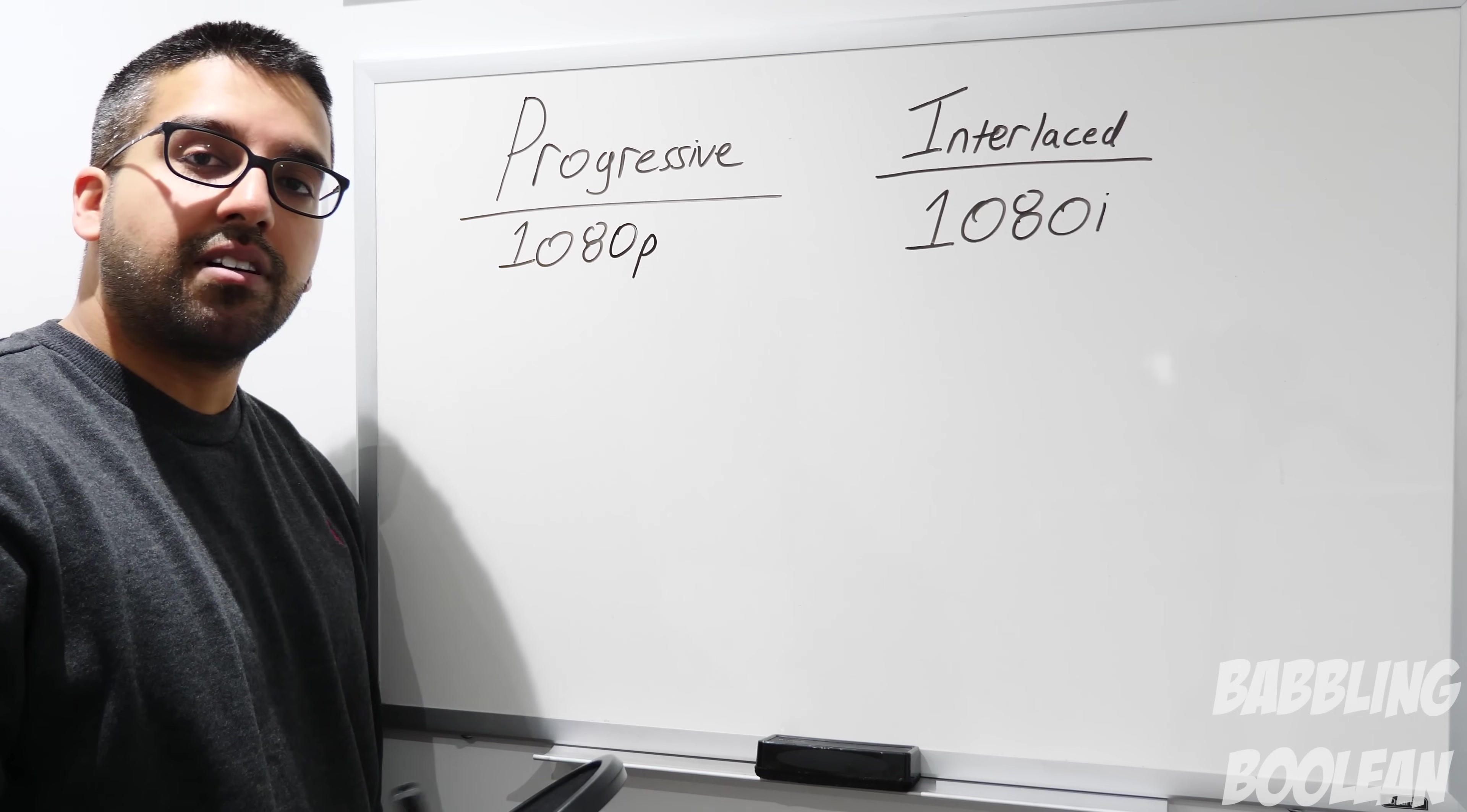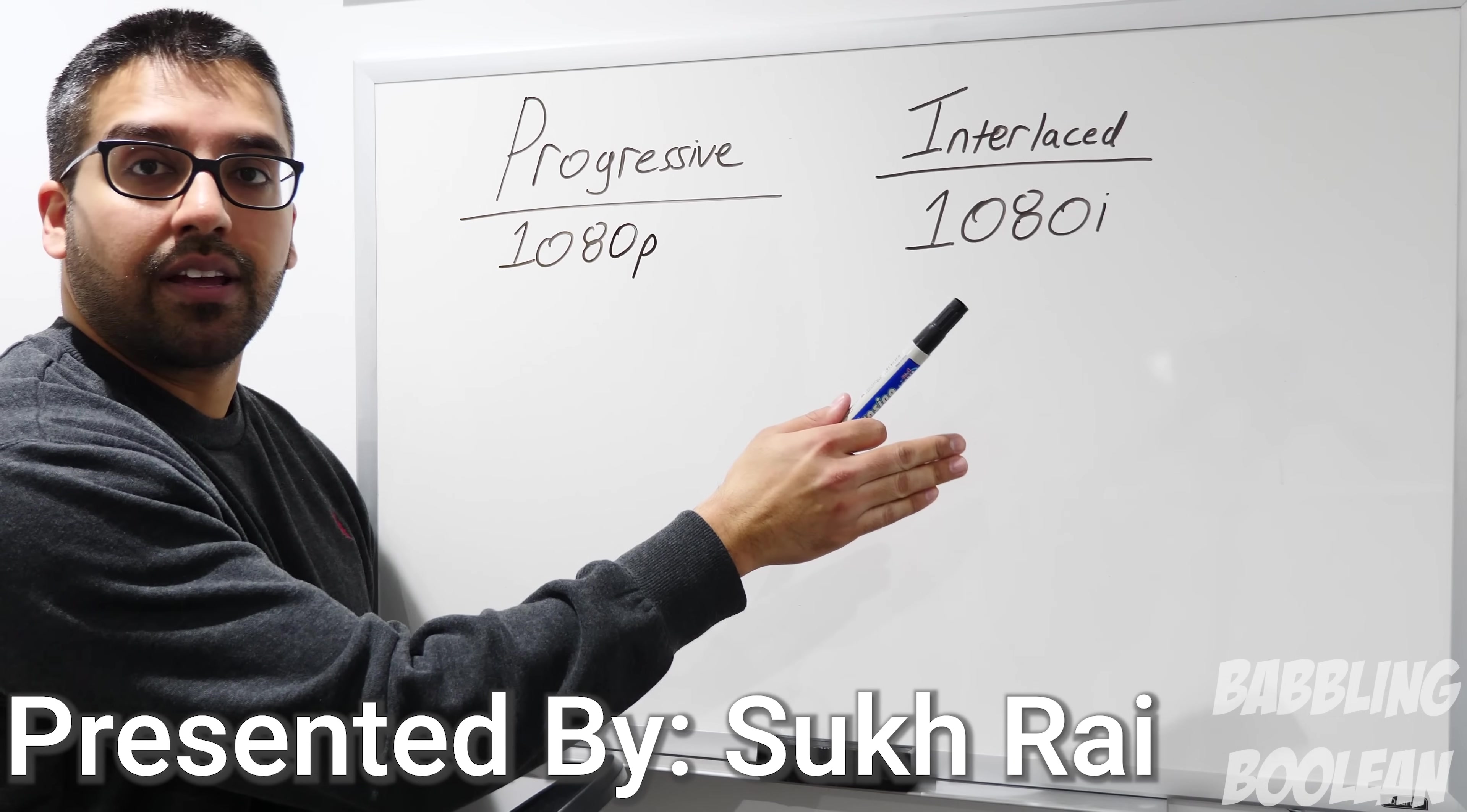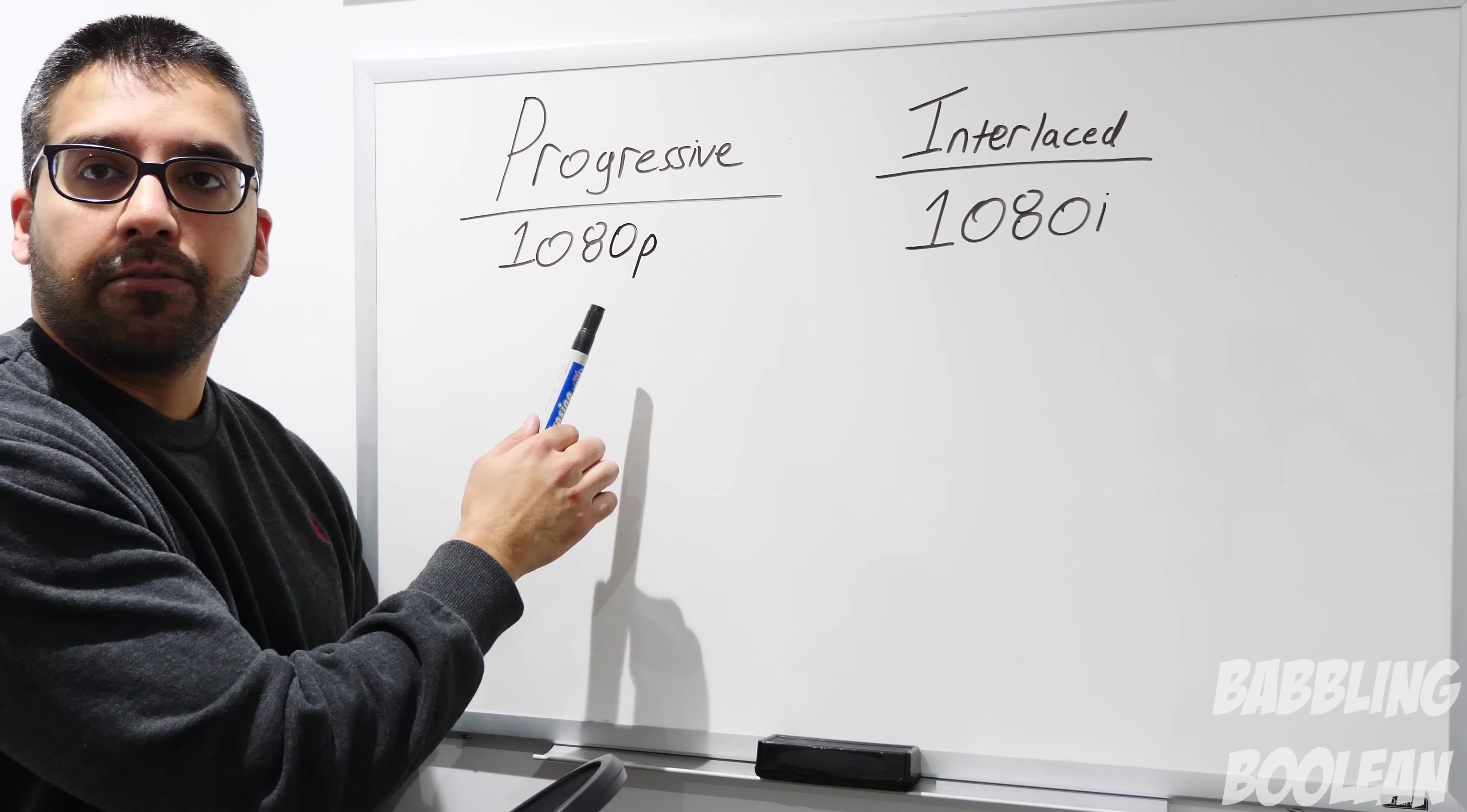Hey welcome guys, this is going to be teaching the concept of progressive versus interlaced technology. Interlaced is primarily used in camcorders, cable, and satellite boxes. Progressive is primarily used in computer monitors and TVs.